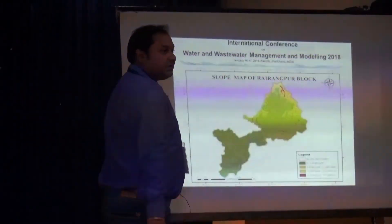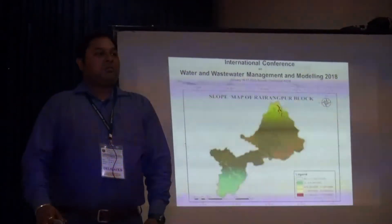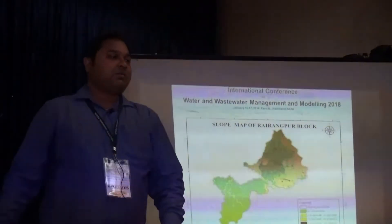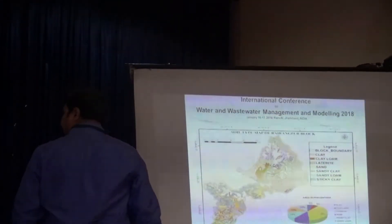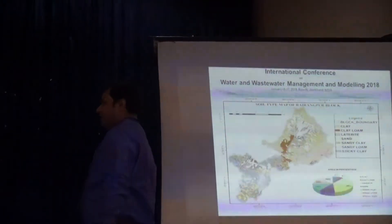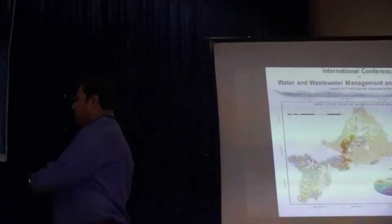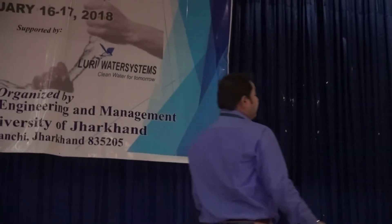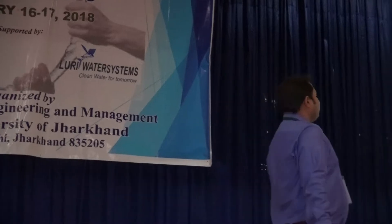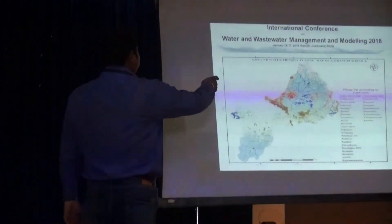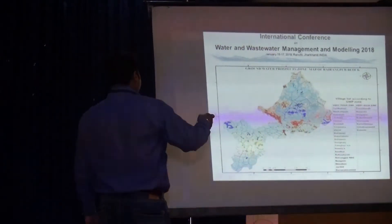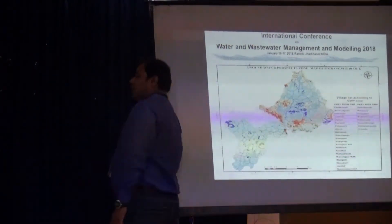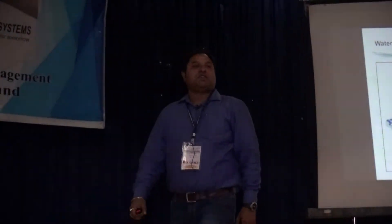Slope is a major factor for groundwater potential. Soil also plays an important role in groundwater management. This is the final map showing the villages which are under water stress and those with high groundwater potential. Any questions?